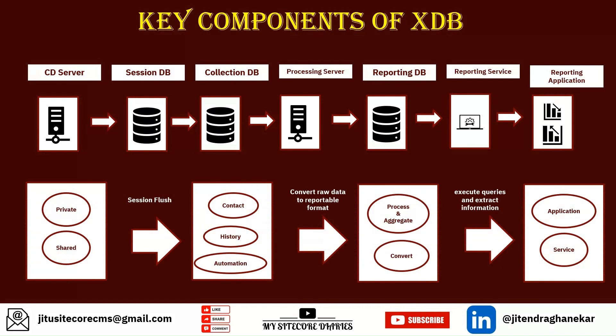Overall, whenever a customer interacts with your website, that data gets stored in the session. There are two types of sessions: private and shared. Once the session is flushed, it gets stored in the Collection DB as contact history and automation data. That raw data is then converted into a reportable format by processing and aggregation, stored in the Reporting DB, and the Reporting Service is used to extract and display that information.